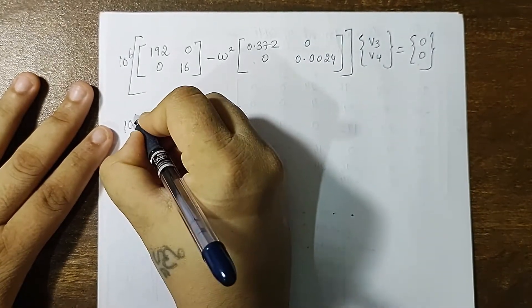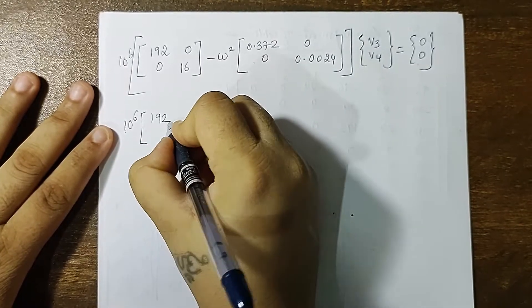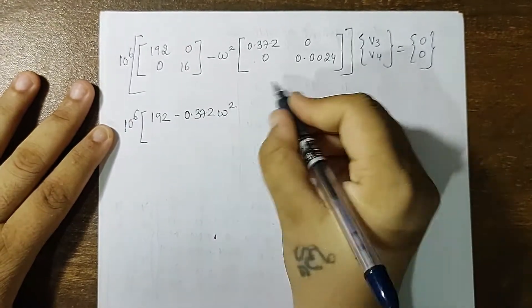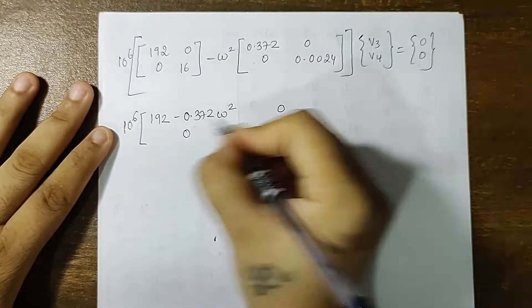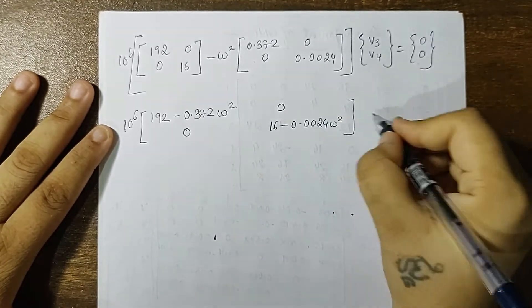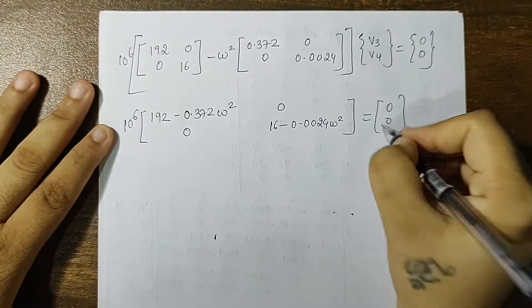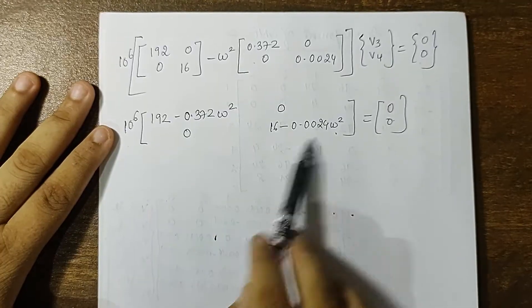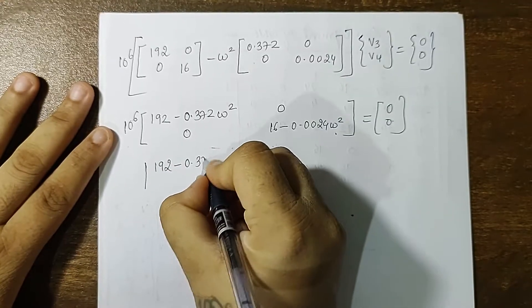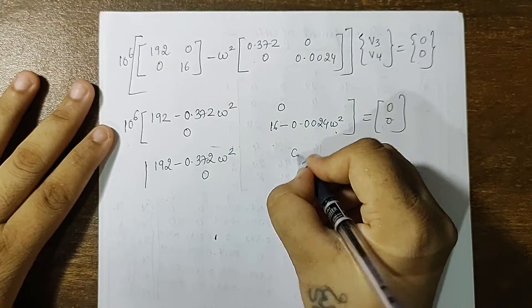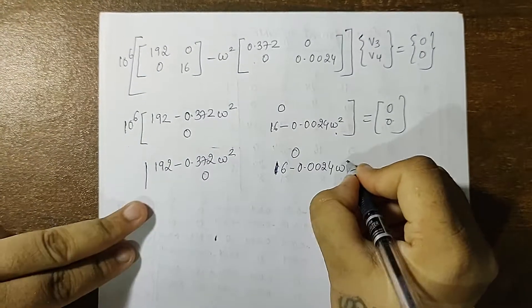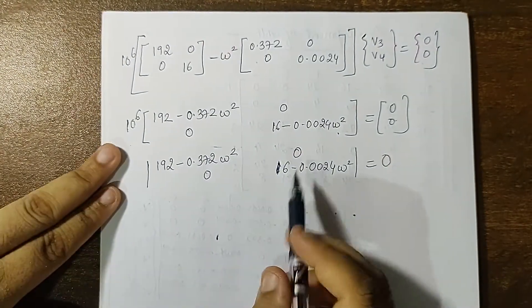So I have 10 raised to 6, 192 and then I can take this in subtraction 0.372 omega square. Here I have 0, 0 and 16 minus 0.0024 omega square is equal to 0. Now I'll take this 10 raised to 6 on the other side, it's gone. So I want to take the mod and calculate the value of omega like I did in the previous numerical. So I have the mod of this matrix.